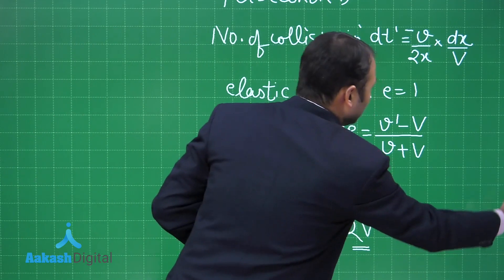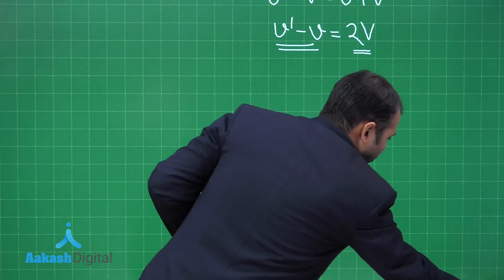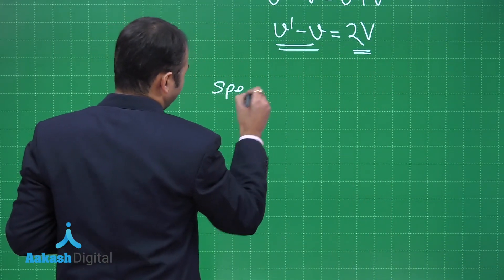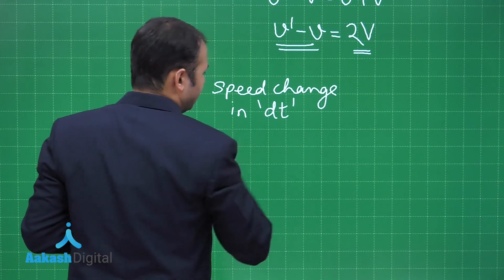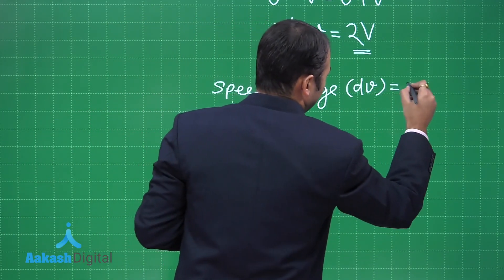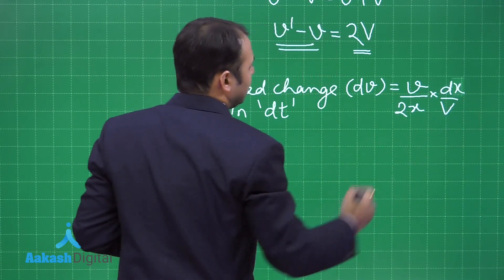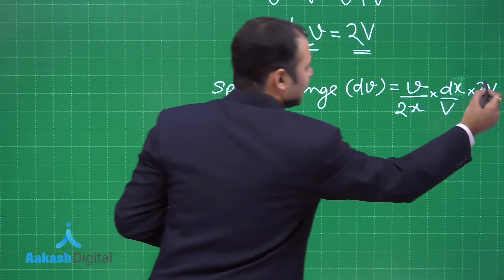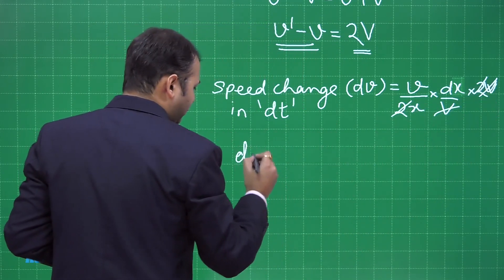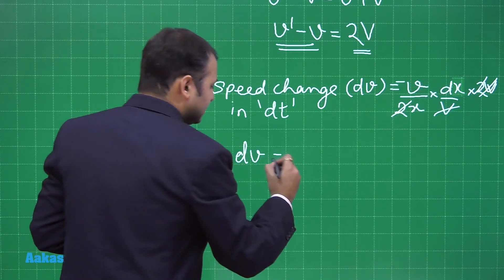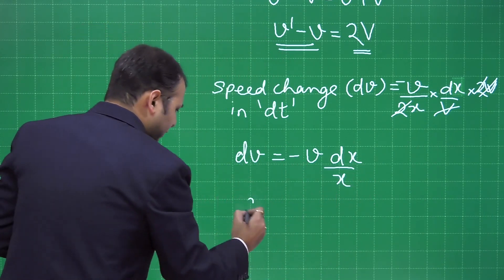For every collision the speed increases by 2V. The number of collisions in dt is already found. So the total speed change dv in dt is: dv = (v/2x) × (dx/V) × 2V. The V's cancel and the 2's cancel, giving dv = −v·dx/x (negative because distance decreases). Simplifying: dv/v = −dx/x.